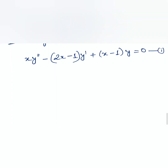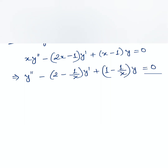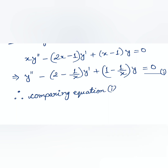According to Rule 1, we convert this to standard form d²y/dx² + P(x)y' + Q(x)y = R(x). We divide throughout by x, name the converted equation as equation 1, then compare with the standard form of second-order linear differential equation to find p, q, and r.